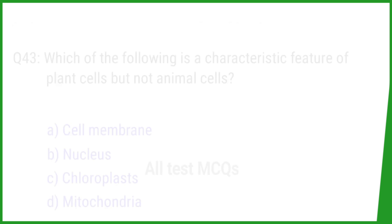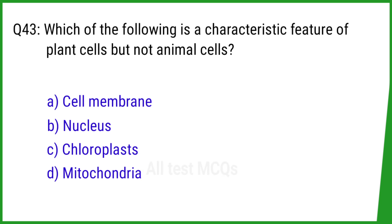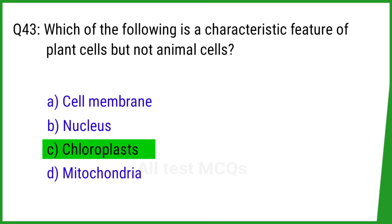Question number 43. Which of the following is a characteristic feature of plant cells but not animal cells? The right answer is option C: Chloroplast.